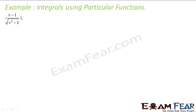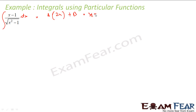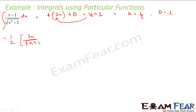Next, we have to find the integration of (x − 1) over √(x² − 1) with respect to x. If you see this pattern, this is nothing but the px + q over √(t² + k²) form. So what I can do is write the numerator as a · (derivative of x² − 1) plus a constant. The derivative of x² − 1 is 2x, so comparing coefficients: a equals 1/2 and b equals minus 1.